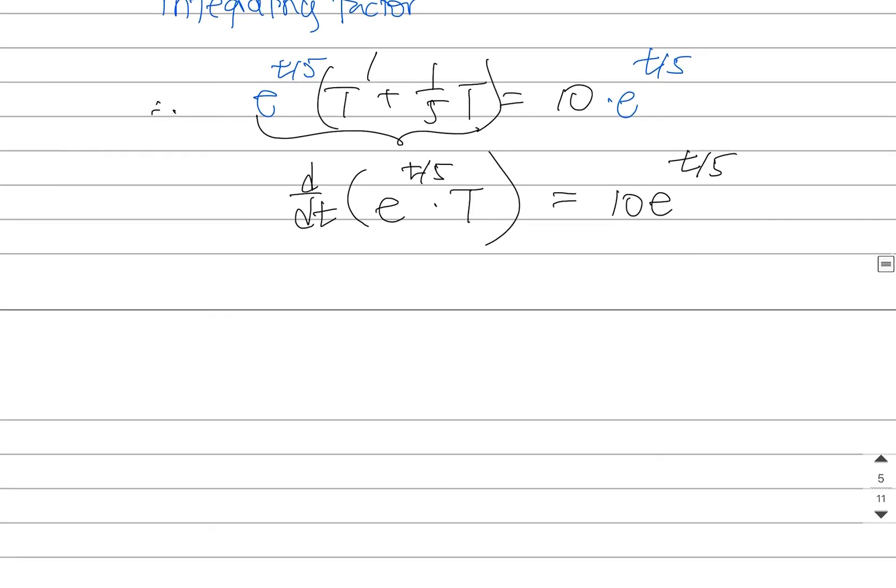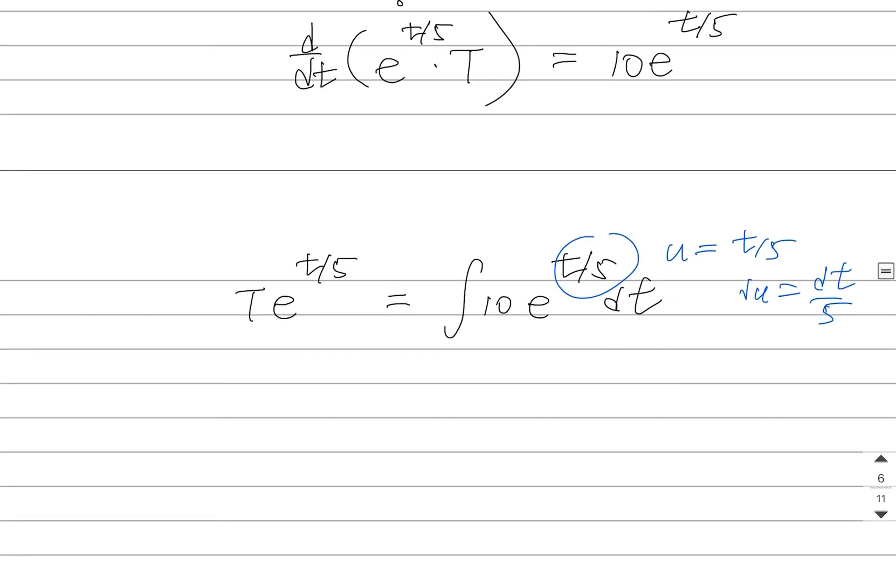And once I've got that, all I need to do is simply anti-differentiate. And when I anti-differentiate this, I need to use substitution rule. u is t/5. du is dt/5. When I go ahead and I do that substitution, I'm going to end up with 50e^(t/5) plus an arbitrary constant.